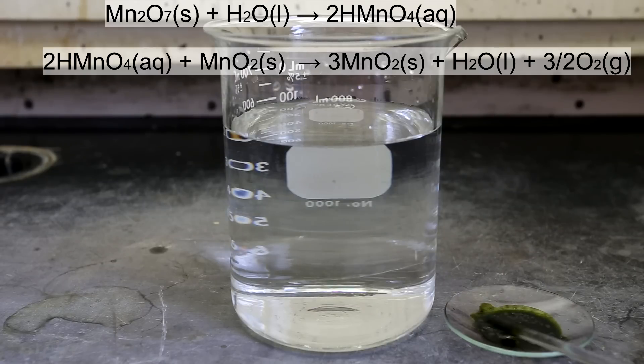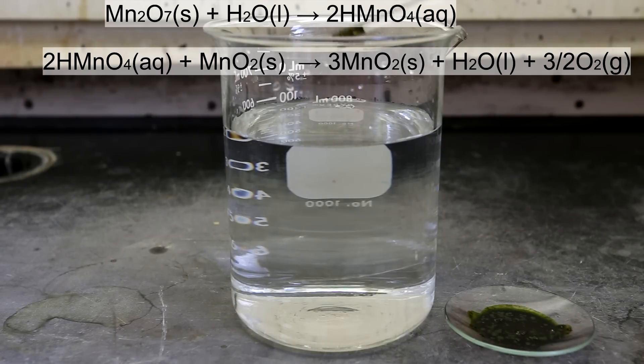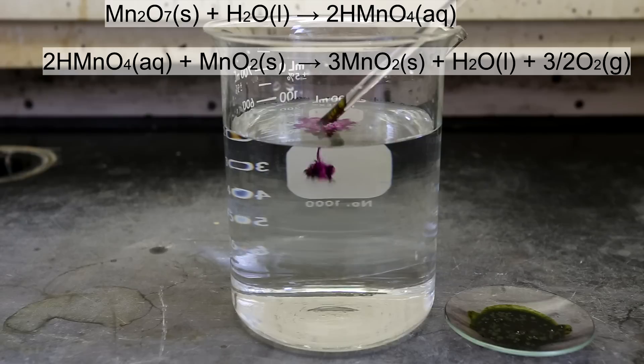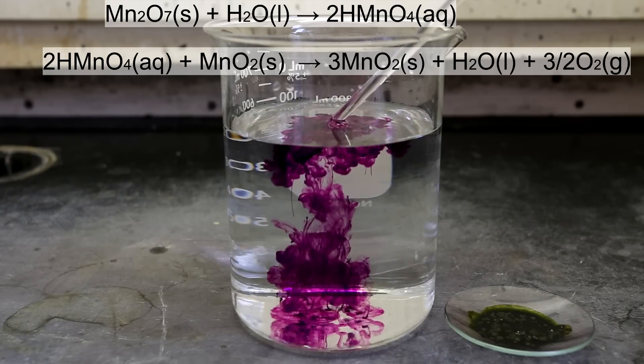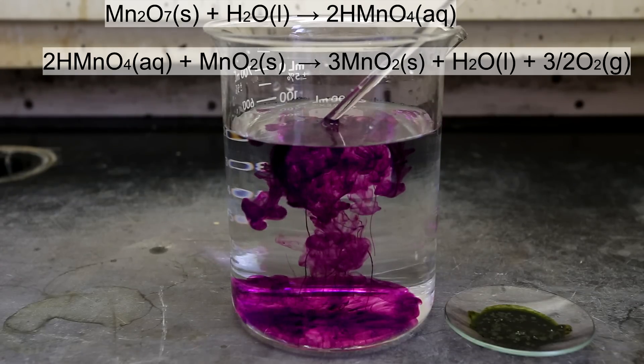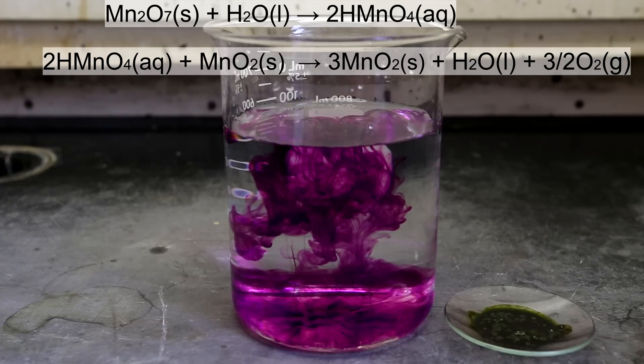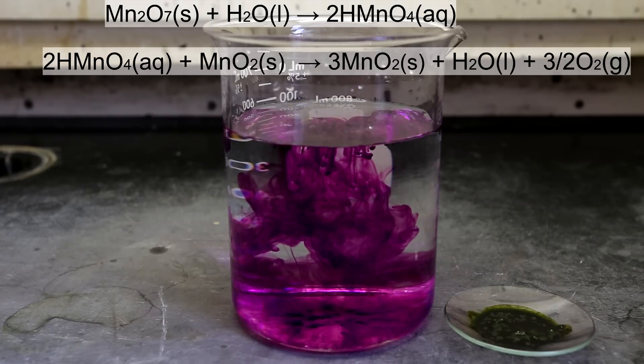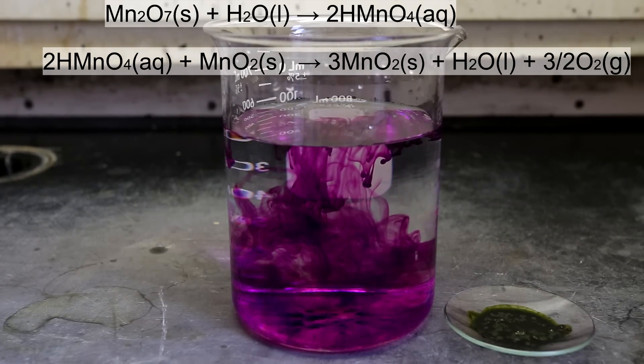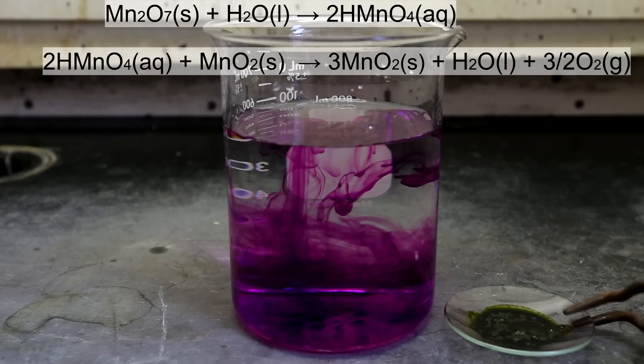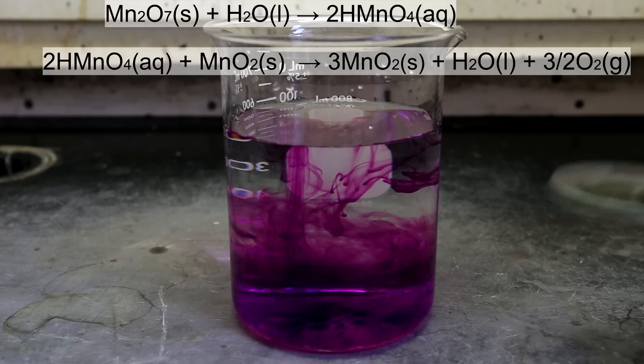To neutralize the potentially explosive manganese heptoxide, simply add water. I put my entire metal piece that was covered with manganese heptoxide into a beaker of water. The water will break down the manganese heptoxide into permanganic acid.